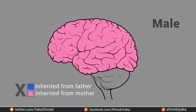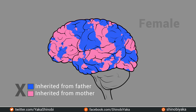Remember, all the X chromosomes for males are inherited from the mother — males never inherit X chromosomes from the father, only a Y. Now what colors would we expect a female brain to be? Female brains would appear as a patchwork of colors, with patches of pink and blue showing up throughout the brain.